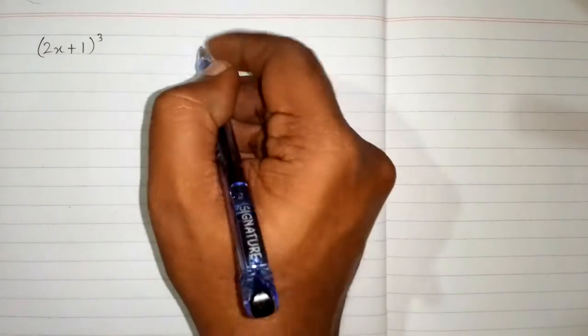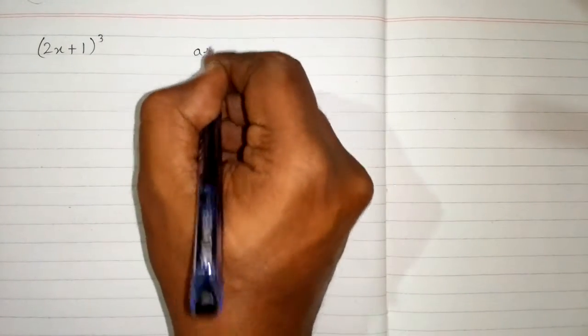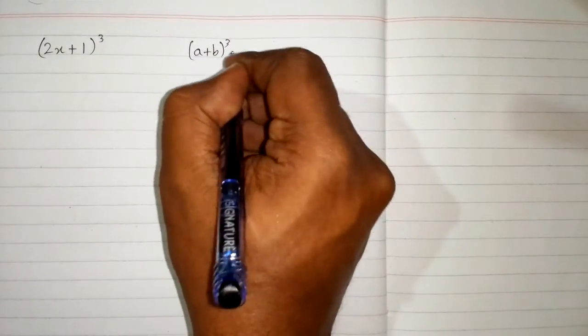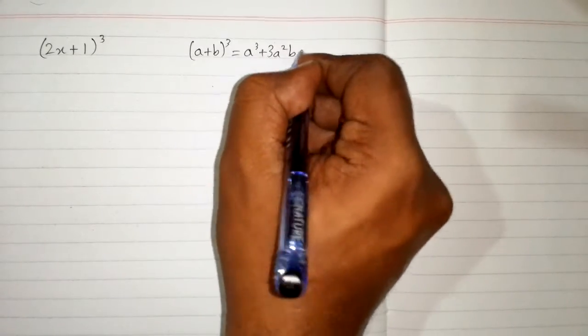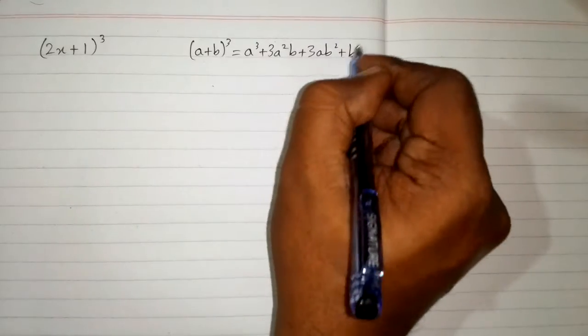In this video we will find the cube of 2x plus 1. So we can use the formula a plus b whole cube is equal to a cube plus 3a square b plus 3ab square plus b cube.